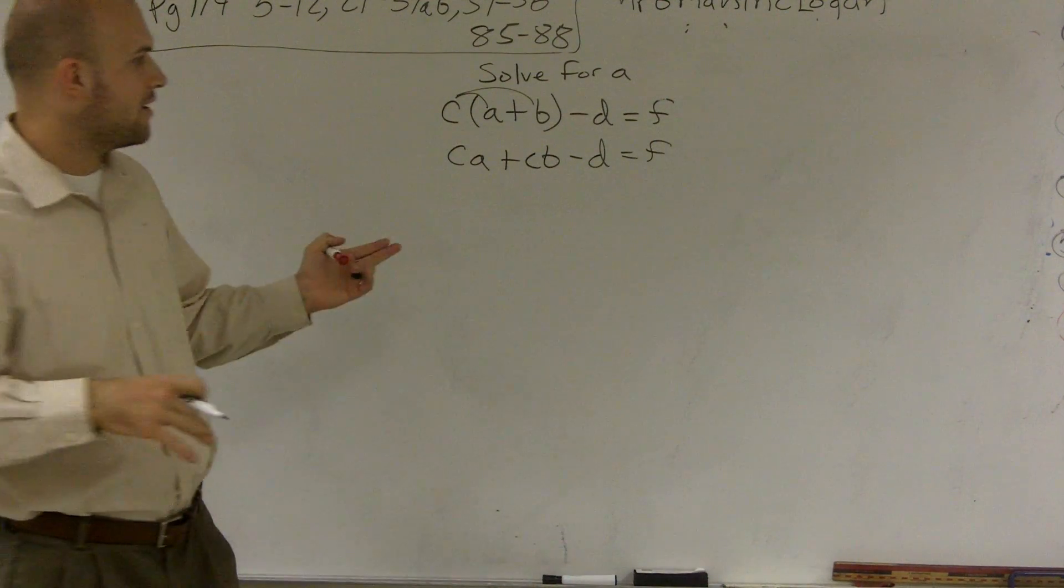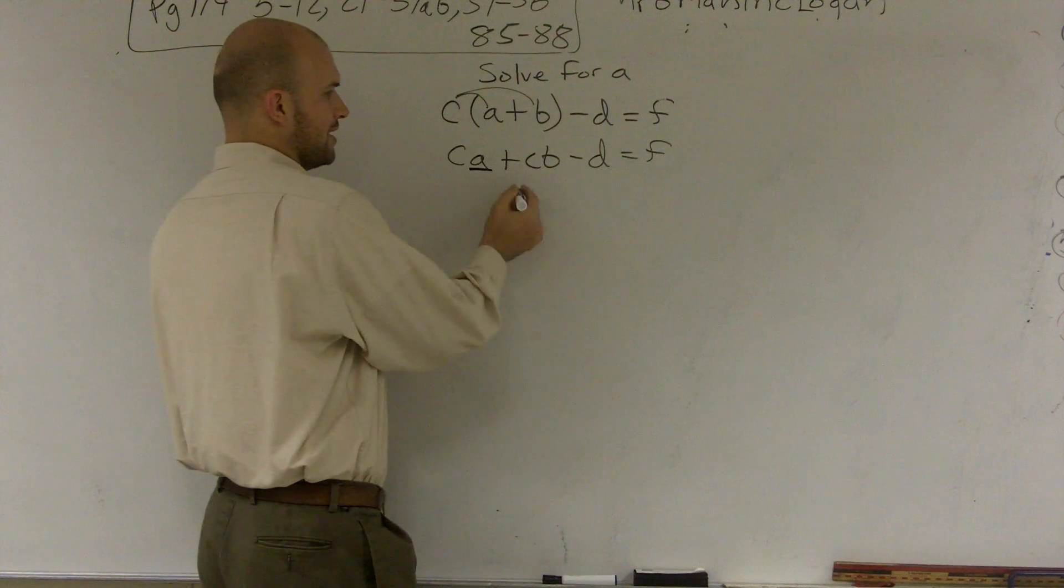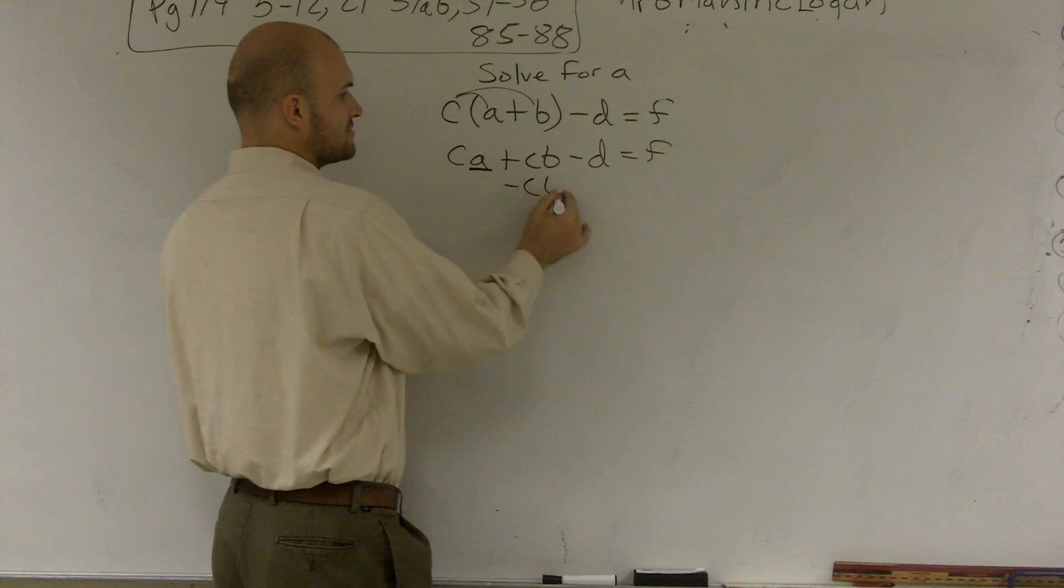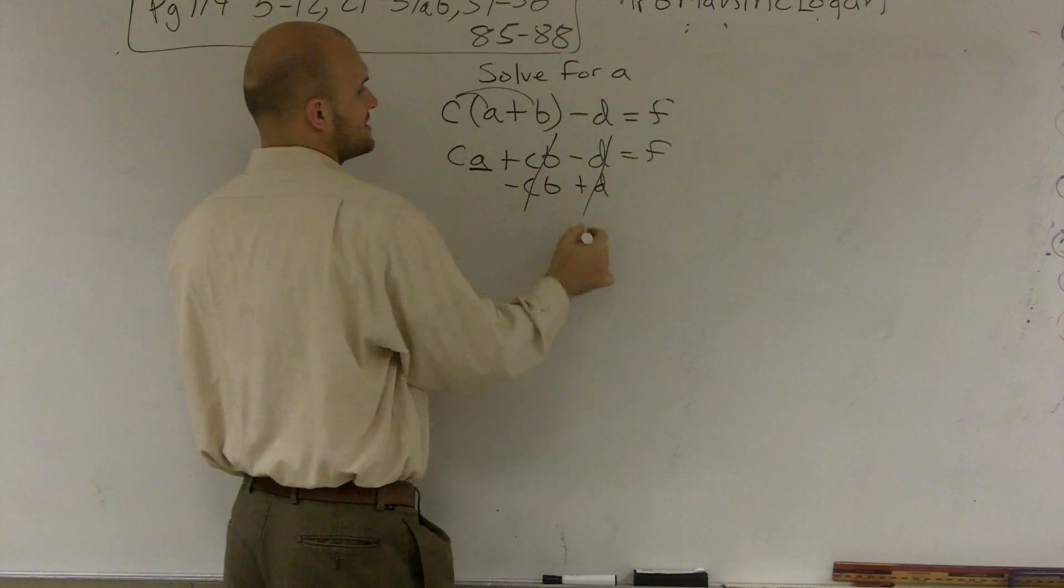Now this helps me out a lot because I look at my A and I'm saying, what's happening to it? Well, I'm adding CB so I can subtract CB. And then I'm subtracting D so I can add D. Those are going to cancel out.